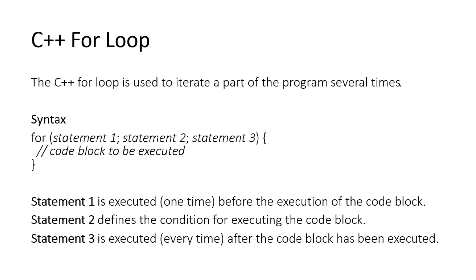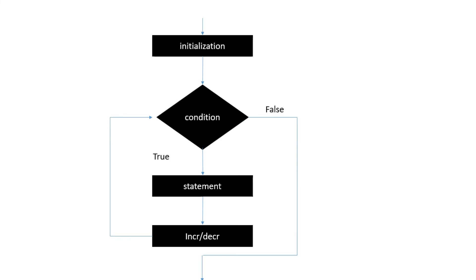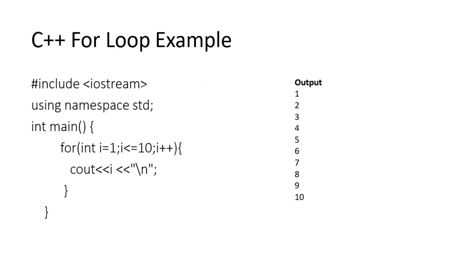Flowchart for the for loop: initialization, then condition check. If false, terminate. If condition is true, then statement prints, then increment or decrement, then condition check again. The for loop program: #include iostream, using namespace std, int main. For(int i = 1; i <= 10; i++) then print i. When i reaches 10 it prints 10, so the output is 1 through 10.